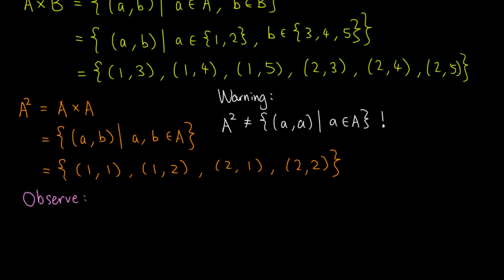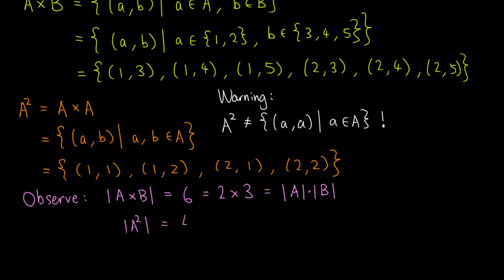Here, we observe that the order of A cross B is 6. It is equal to 2 times 3, which is the product of the sizes of the sets A and B. Also, the order of A squared is 4, which is 2 squared, equal to the square of the order of A. It is not hard to see that these two results hold true in general for finite sets A and B.